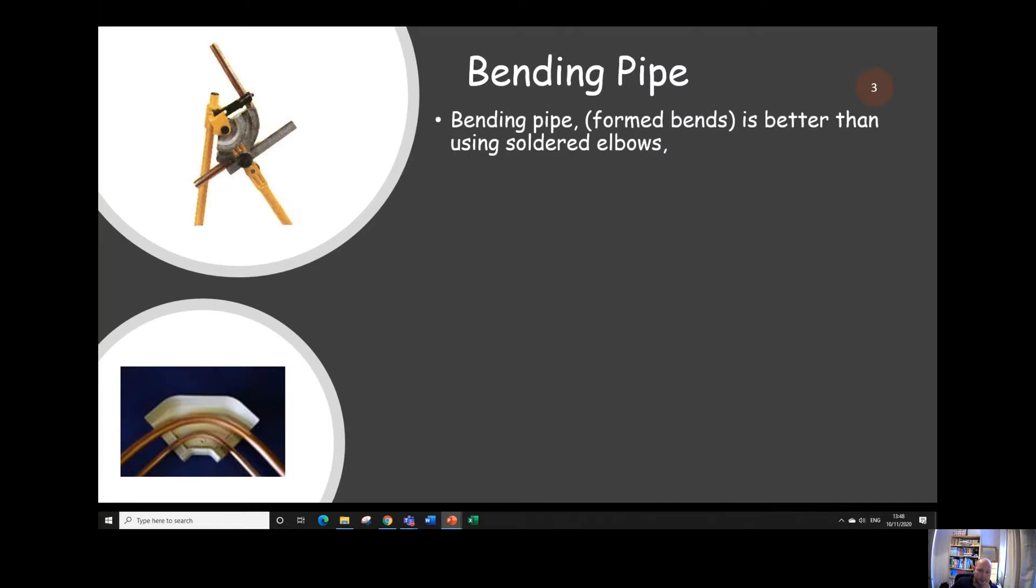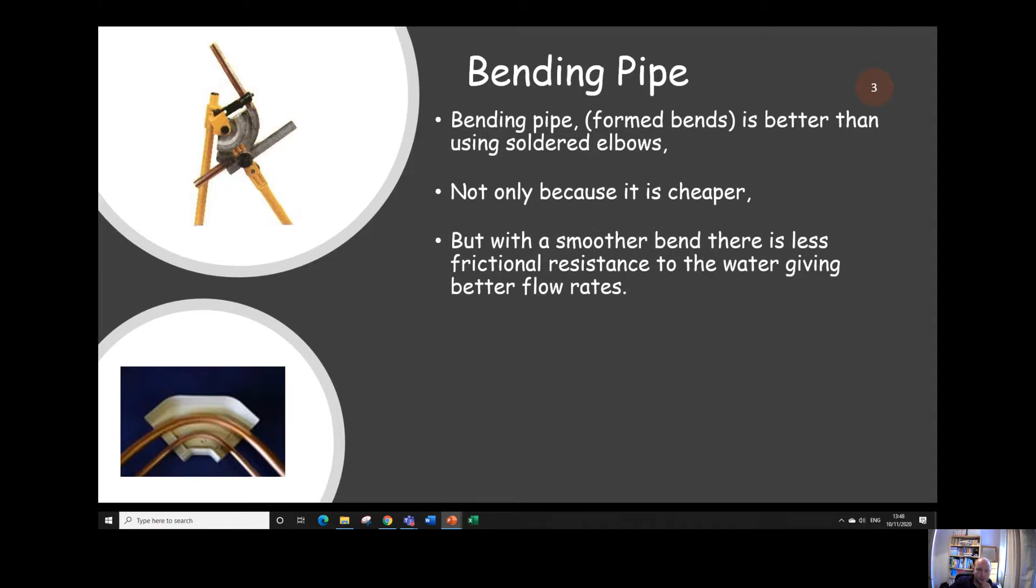So bending pipe. Bending pipe is better than using soldered elbows or any sort of elbows, compression elbows, push fit elbows. Not only because it's cheaper, but it also gives a smoother flow. There's less frictional resistance to the water going around a nice smooth bend than there is going around a sharp elbow.